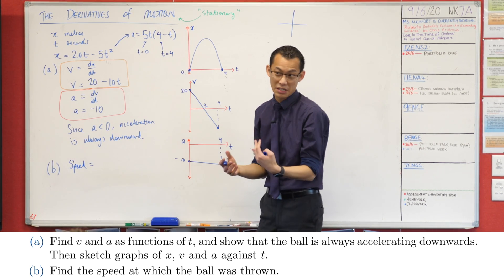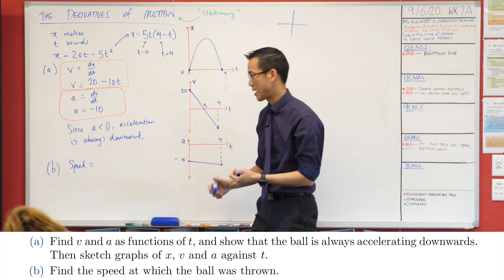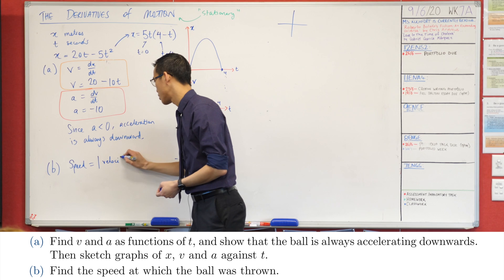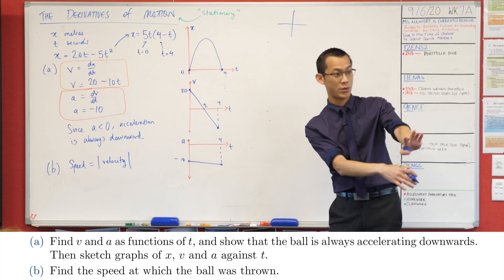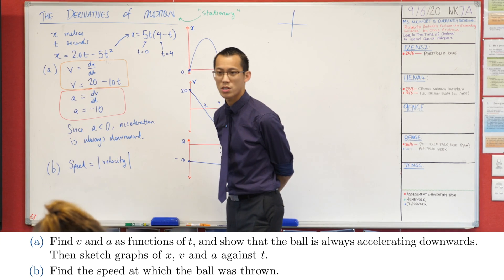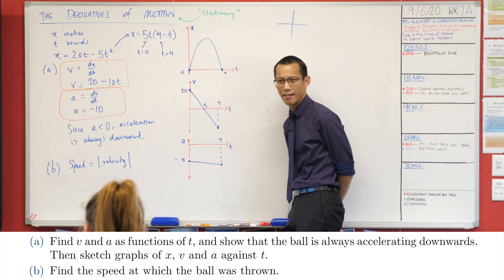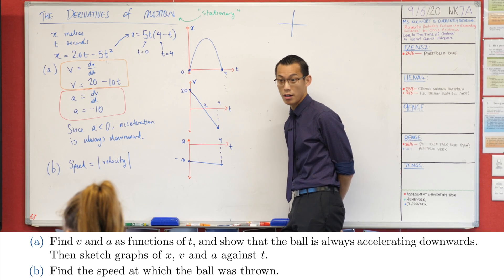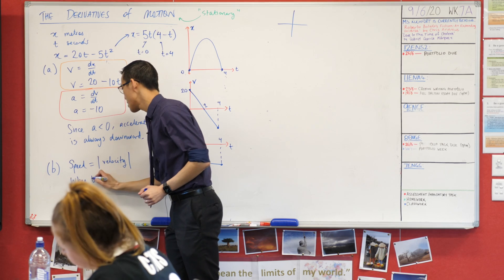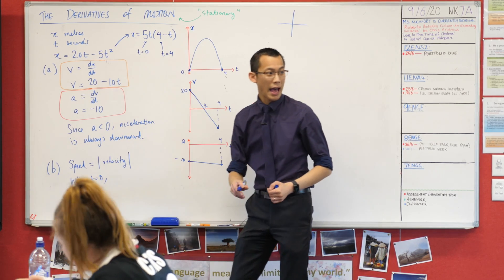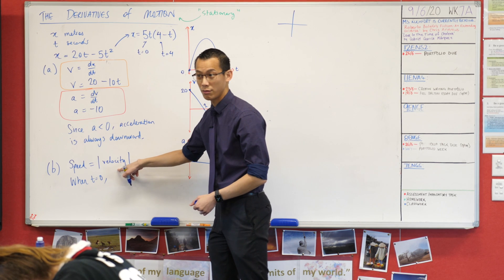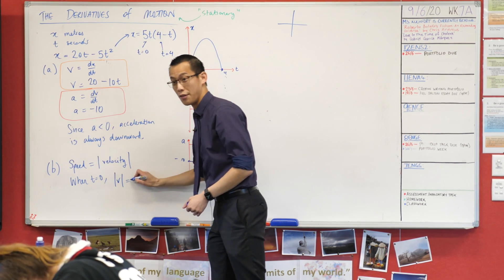Because speed is connected to velocity but it's like velocity when plus or minus doesn't matter, one of the ways we can do this is to apply absolute value signs to it because that's a way of saying I disregard whether it's positive or negative. It says when the ball was thrown. What time was that? At time zero. So this is where the ball starts going.